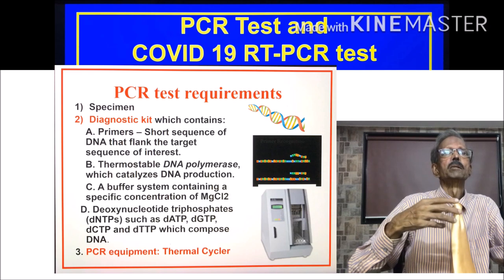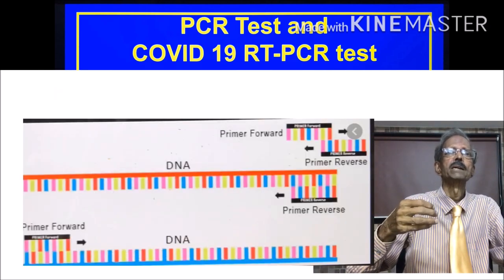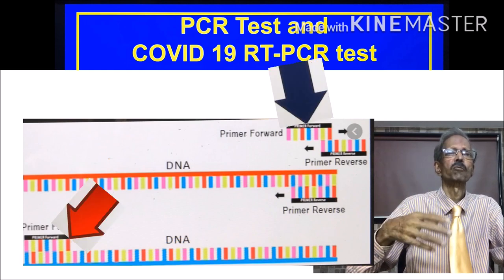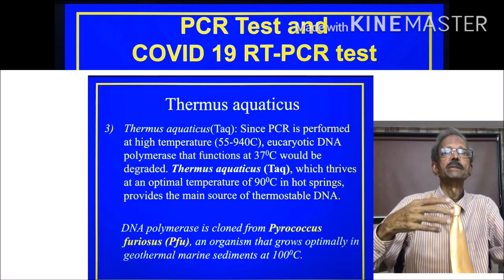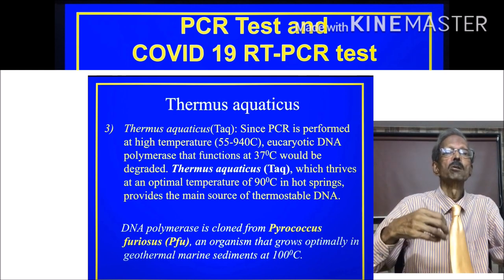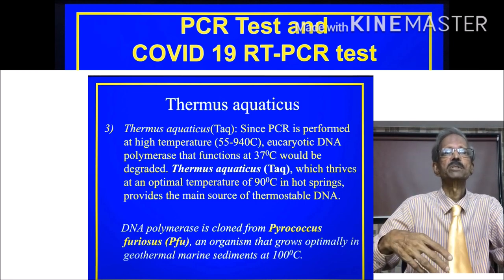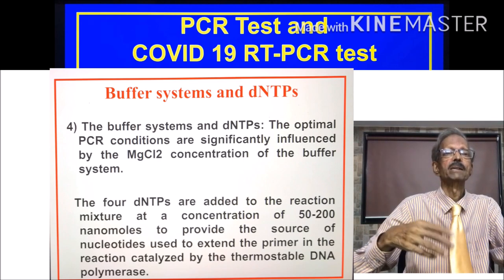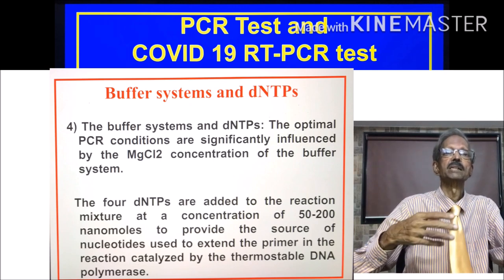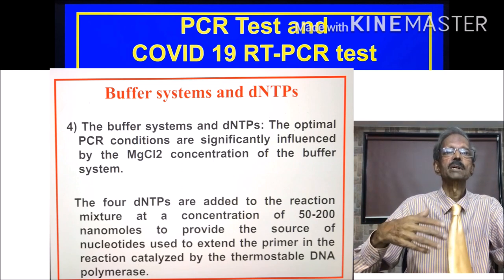The diagnostic kit contains primers — short sequences of DNA that flank the target sequence of interest, as shown here on the left-hand side — and thermostable DNA polymerase, a very important enzyme which catalyses DNA production. You also require a buffer system containing a specific concentration of magnesium chloride, and deoxyribonucleotide triphosphates (dNTPs) such as dATP, dGTP, dCTP, and dTTP, which compose DNA.